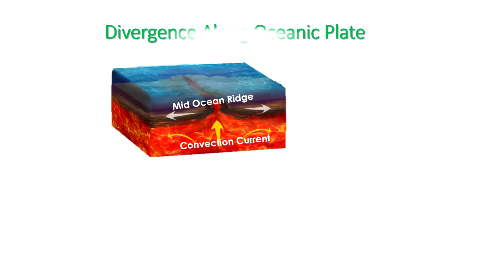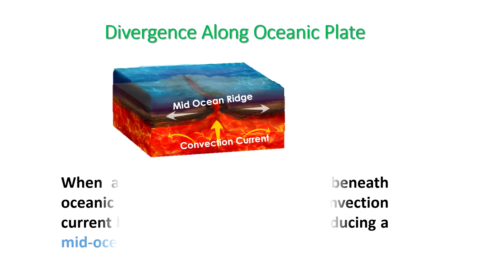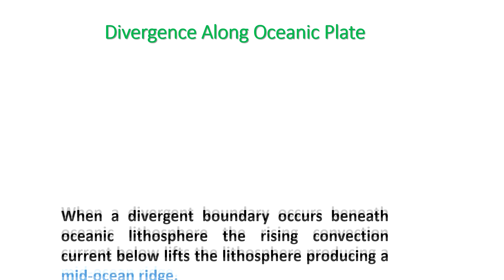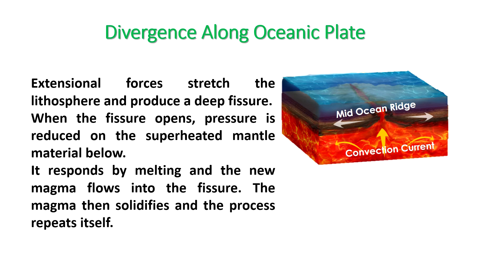When a divergent boundary occurs beneath oceanic lithosphere, the rising convection current below lifts the lithosphere, producing a mid-ocean ridge. Extensional forces stretch the lithosphere and produce a deep fissure. When the fissure opens, pressure is reduced on the superheated mantle material below — it responds by melting and the new magma flows into the fissure. The magma then solidifies and the process repeats itself.